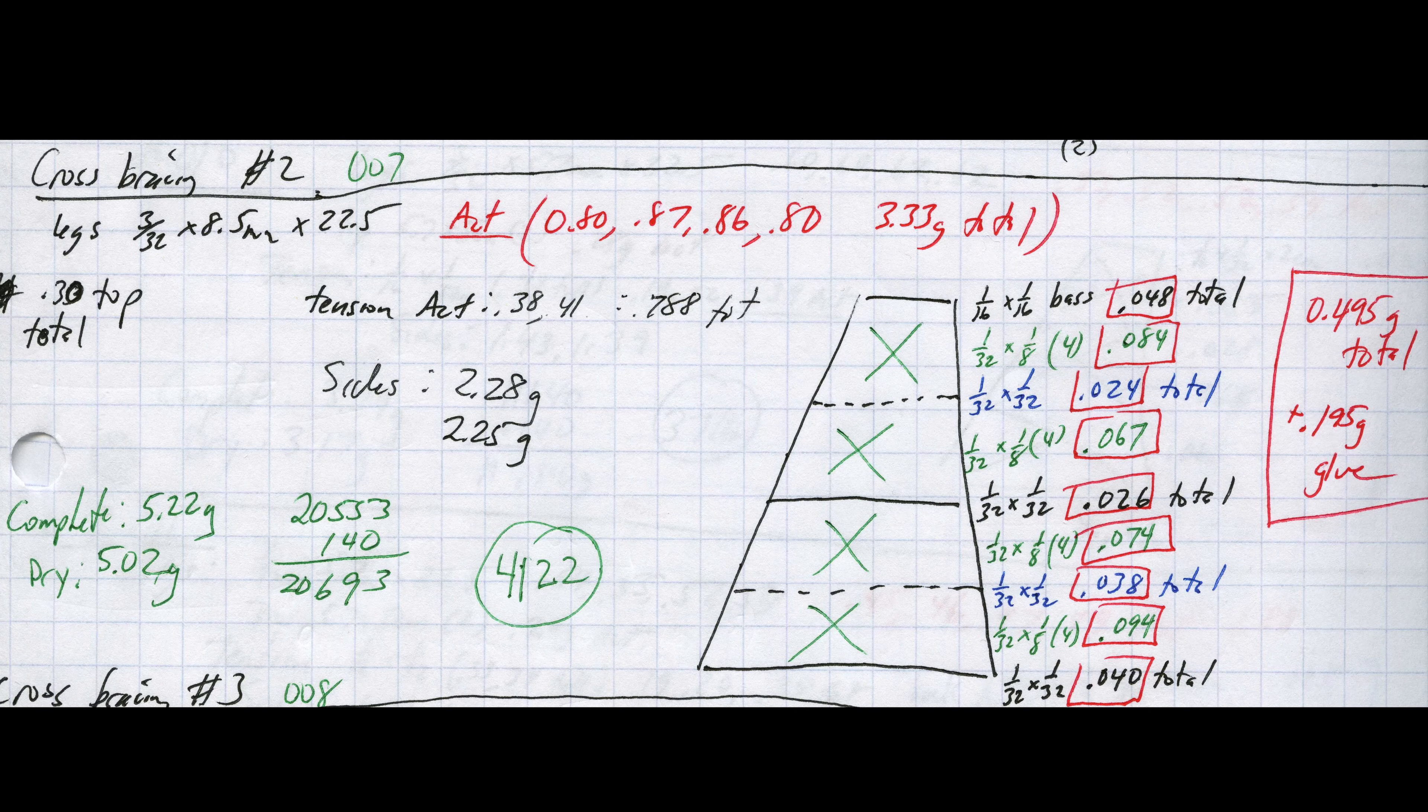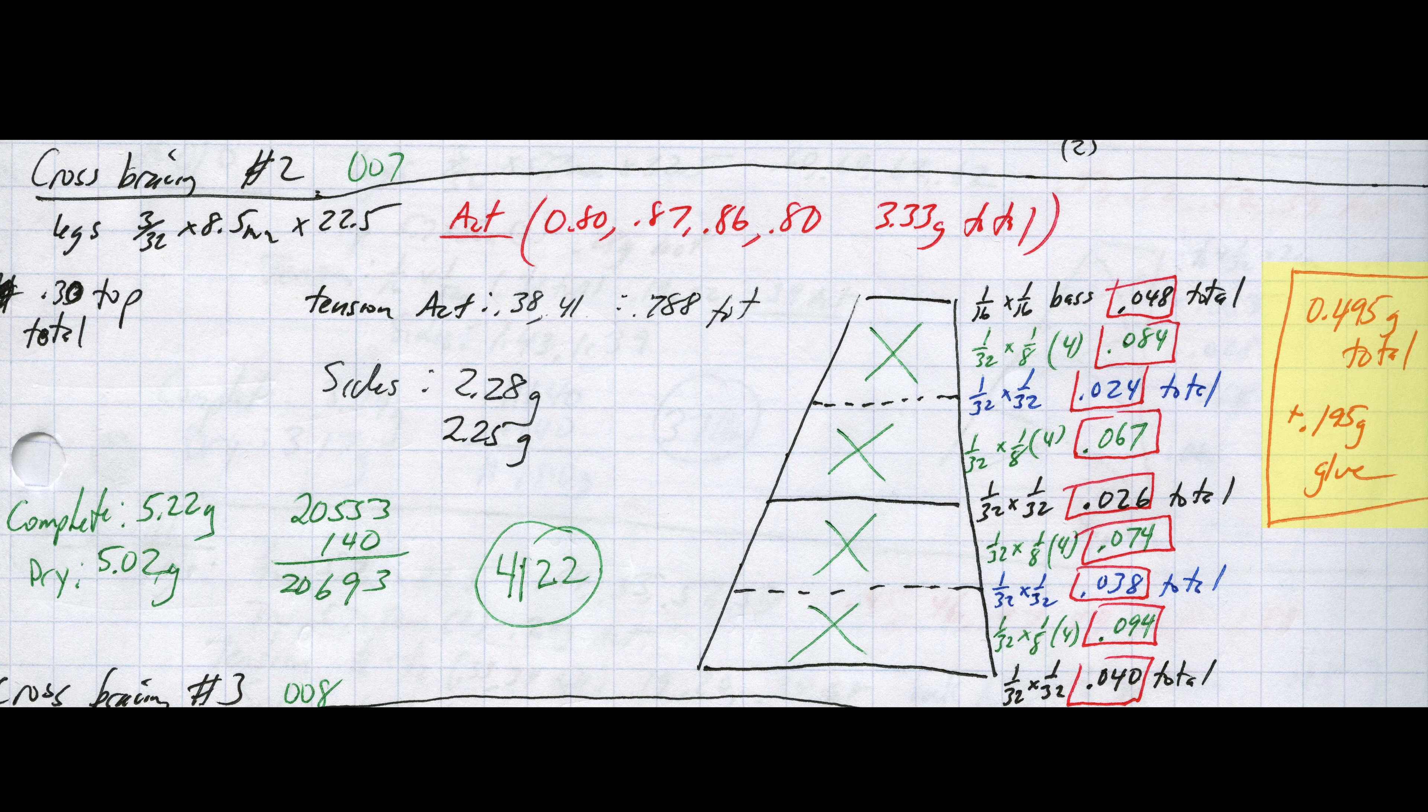The second build in this test used the exact same design as the previous one, but every single cross bracing stick is scaled down dimensionally. You can see the total cross bracing material mass has been significantly cut down from 1.14 grams to about 0.5 grams.